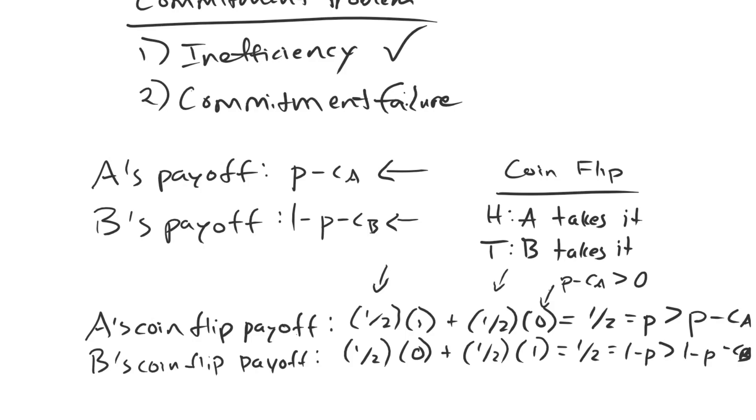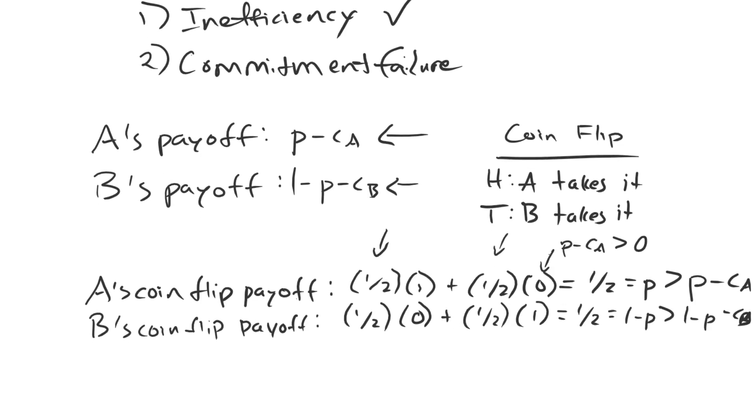Same thing with B down here, where if B is losing this half the time on heads, it's supposed to get a payoff of zero right there, but it could instead fight at that point and receive one minus P minus CB. And that is a larger payoff for it than receiving that zero is. So neither side is willing to credibly commit to the result of the coin flip. If either side loses, the losing side chooses to fight instead, and hence we have commitment failure.